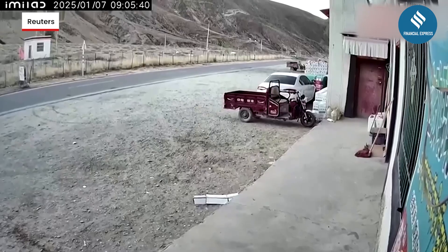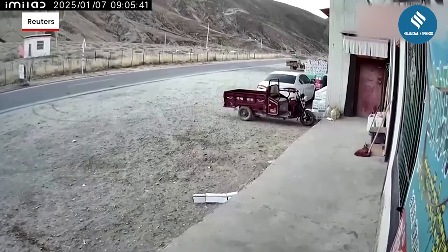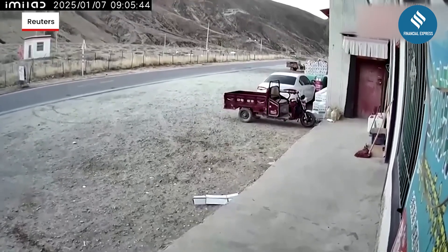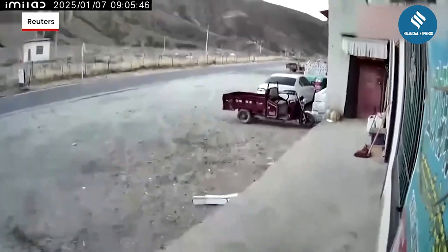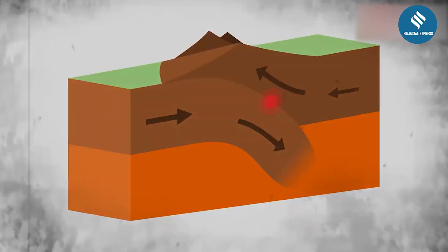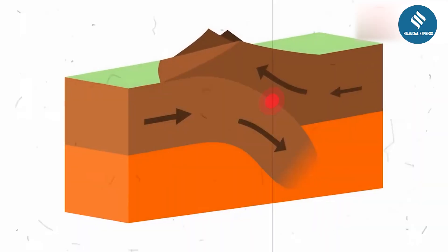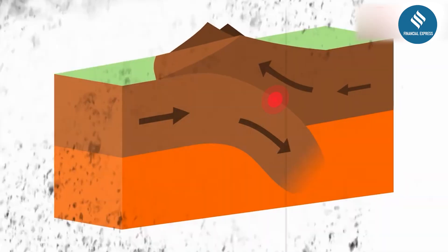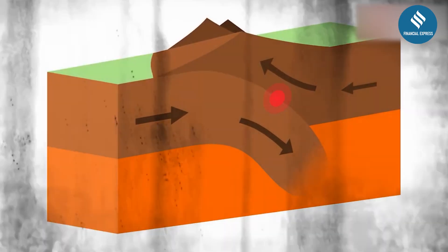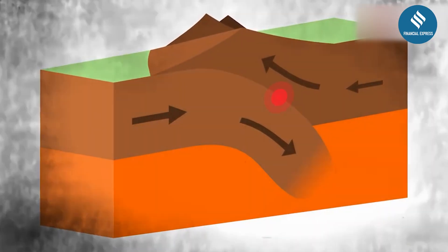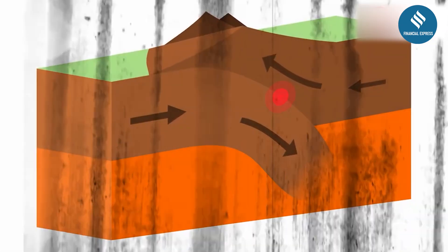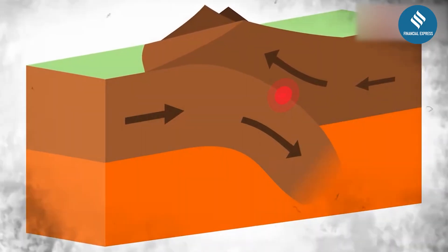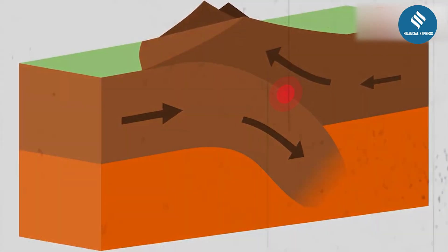An earthquake is a sudden shaking or vibration of the Earth's surface caused by the release of energy within the Earth's crust. This release of energy generates seismic waves, which are the vibrations that travel through the ground and cause the shaking we feel during an earthquake. The strength or intensity of an earthquake depends on how much energy is released and how far the seismic waves travel.